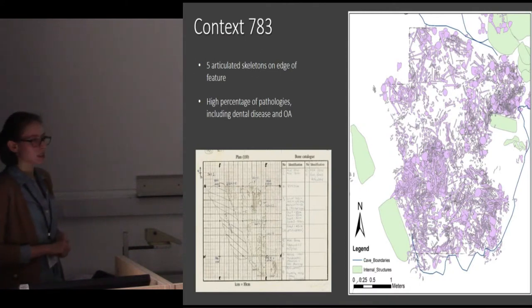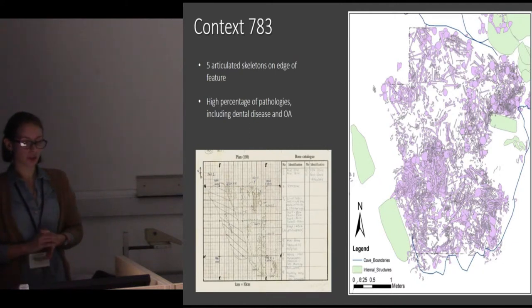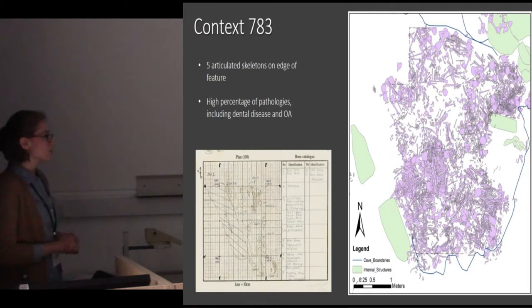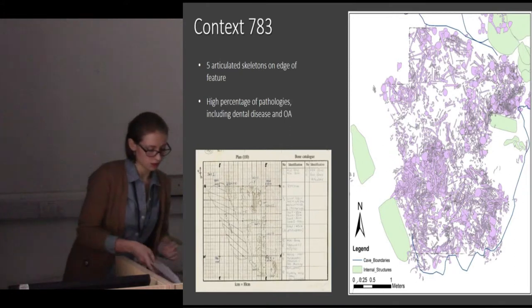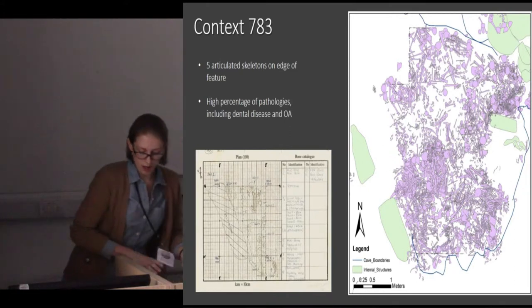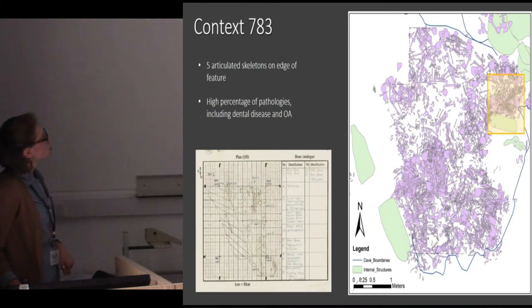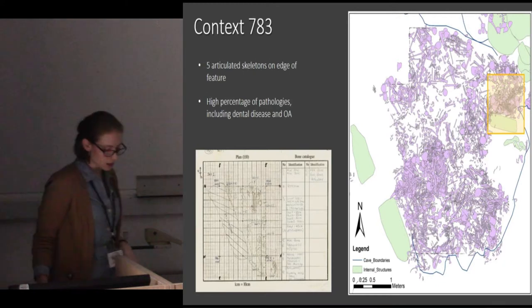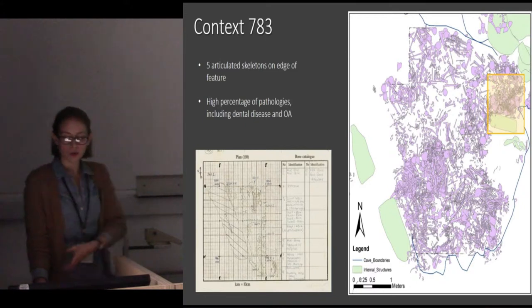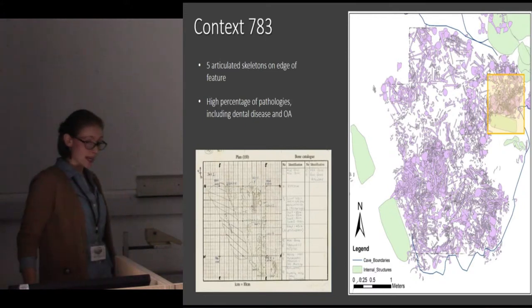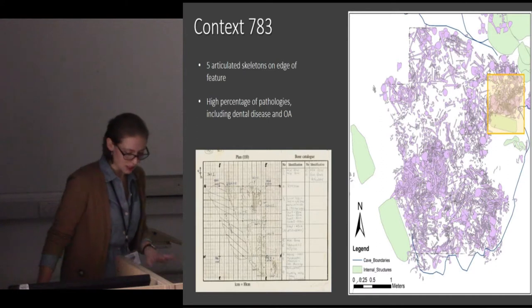Context 783 is also quite unique in the context of the rest of the site because it contains a really high percentage of pathologies — particularly extreme pathologies — including dental disease, and pathologies which particularly seem to have affected the extremities: the hands and feet and the spine. I'm going to focus in even greater depth on just one metre square in the northeastern corner, because it was recorded really well at the time of excavation — recorded and excavated by one individual all the way to the base of the deposit just above the limestone bedrock.